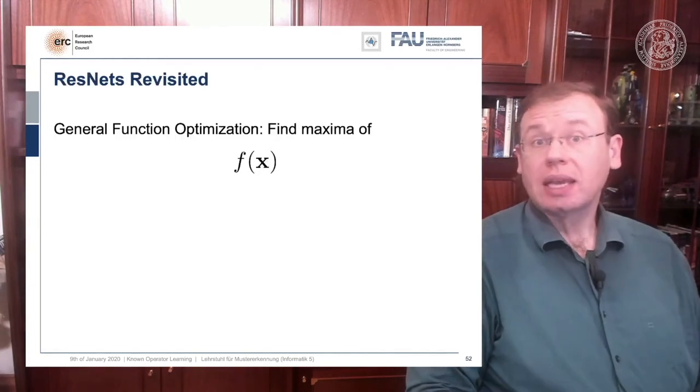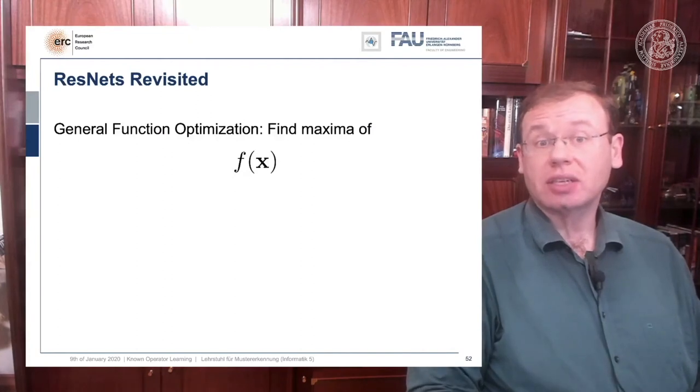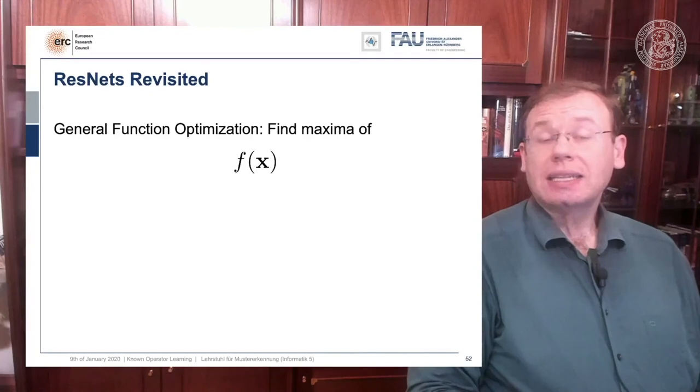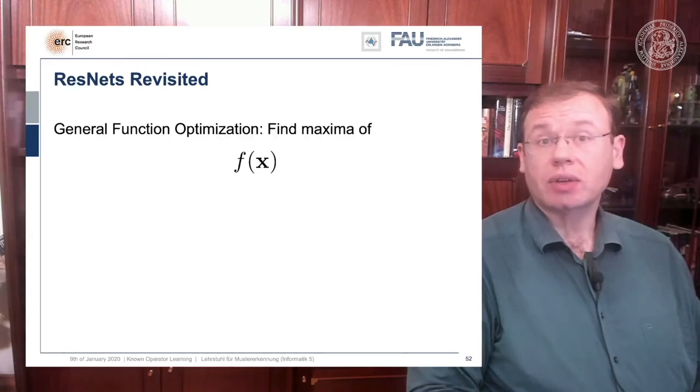And by the way, if you think of this energy minimization idea, then you also find the following interpretation. The energy minimization and this unrolling always leads to a ResNet, because you take the previous configuration minus the negative gradient direction, meaning that it's the previous layers output plus the new layers configuration.